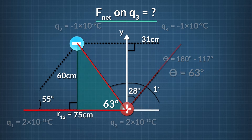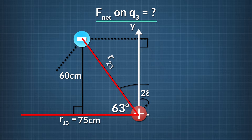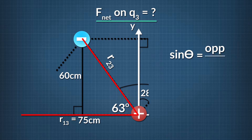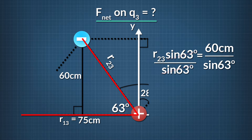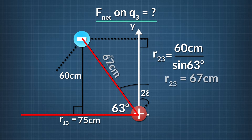Now we can use the sine trigonometric function to solve for r23. Sine theta equals the side opposite the angle divided by the hypotenuse. Plugging in our values, the sine of 63 degrees equals 60 centimeters divided by r23. After we multiply both sides by r23 and divide both sides by the sine of 63 degrees, we see that r23 equals 67 centimeters.